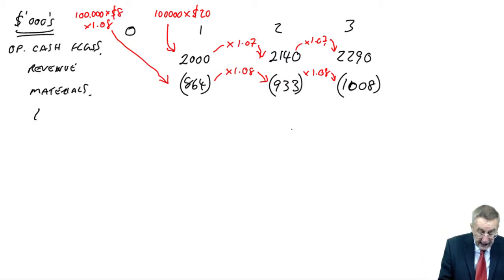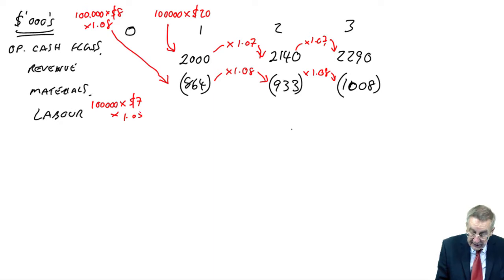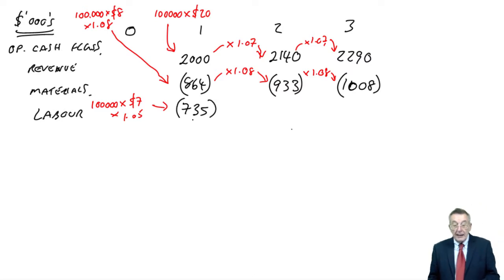If it carries on inflating, as you assume it would, then multiply by another 1.08 for the third year brings it up to 1,008. So once you get into it, the problem is more of time than difficulty. In a similar way, what about labour? Labour, seven dollars a unit, but again, it's at current prices. And below, it's inflating at 5% a year. So the actual cash flow in the first year, it's 100,000 at seven. But it was at current prices, so in a year's time, a year's inflation. Multiply by 1.05 to inflate. And the actual flow, 700 times 1.05 is 735. And this time, I'm not going to keep writing, but each year thereafter, keep multiplying by 1.05 to add on 5% inflation.